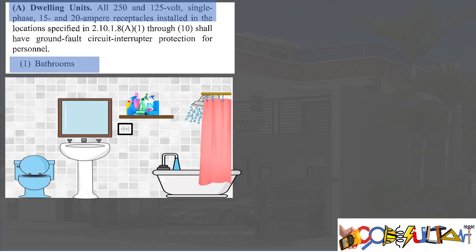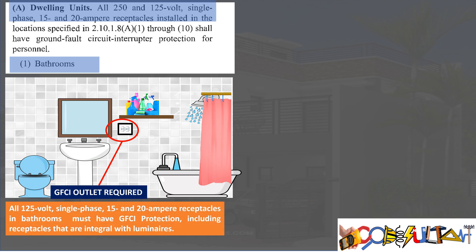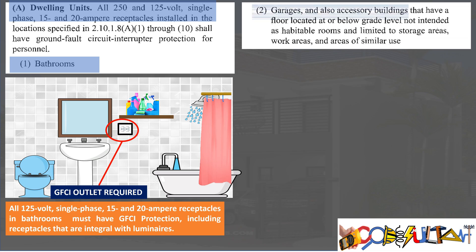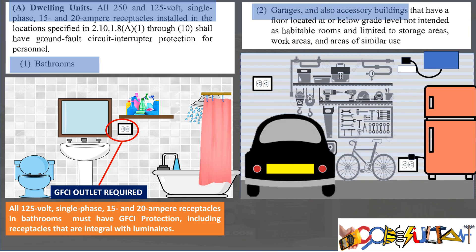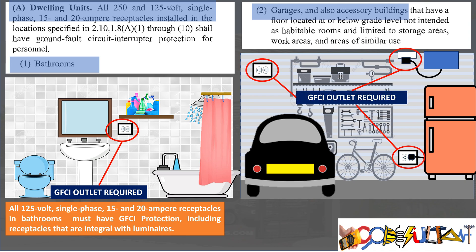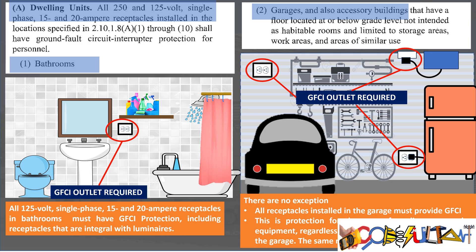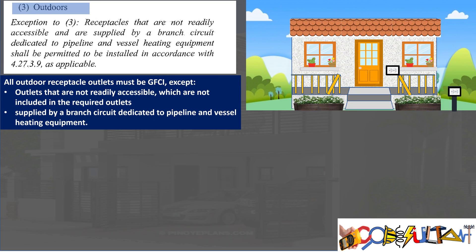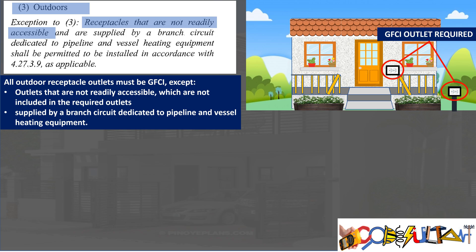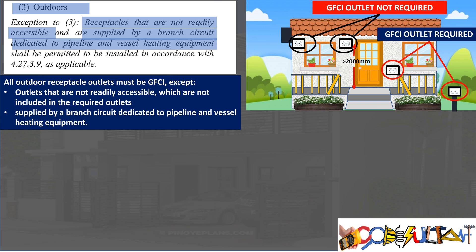For dwelling units, GFCI outlets are required in the following locations: 1. bathrooms — all receptacle outlets including receptacles integral to luminaires must have GFCI protection; 2. garages and accessory buildings — all receptacle outlets must provide GFCI regardless of where the receptacle is located; 3. all outdoor receptacle outlets must be GFCI, except for outlets not readily accessible or not complying with required outlets of Section 2.10.3.3 — for example, foyer and balcony outlets more than two meters from floor level are not required to be GFCI. Outlets supplied by a branch circuit dedicated to pipeline and vessel heating equipment are also not required to be GFCI.